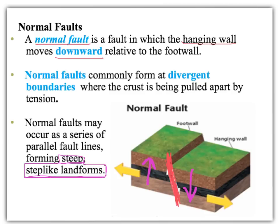When we have a normal fault, we get steep, step-like landforms. The big difference from a fold is you're seeing a crack in the rock — there's no bending. A dark band of rock on one side moved down to the other side; it doesn't have that nice smooth S-shape you'd expect from a fold. There's a crack, a break right in the rock.